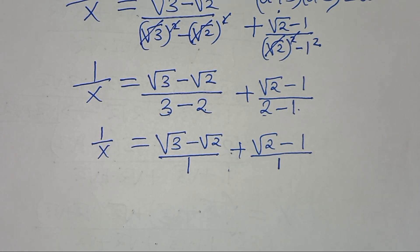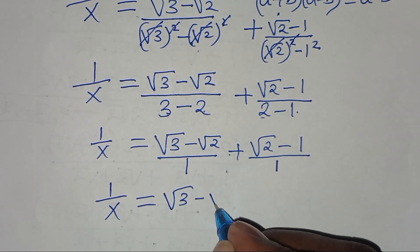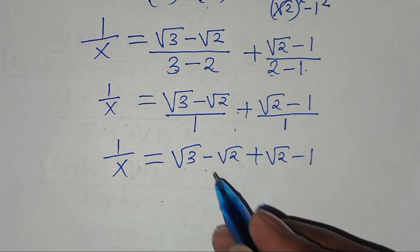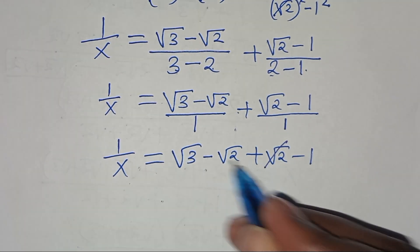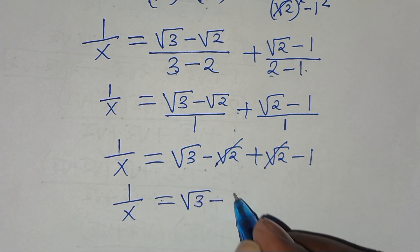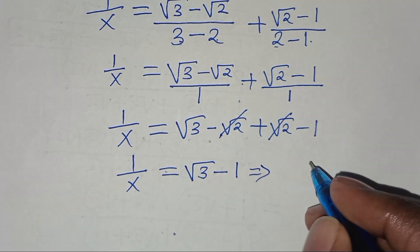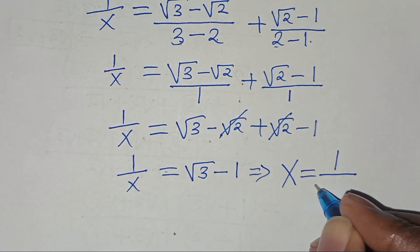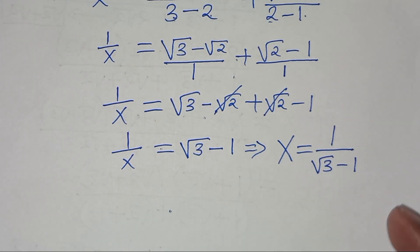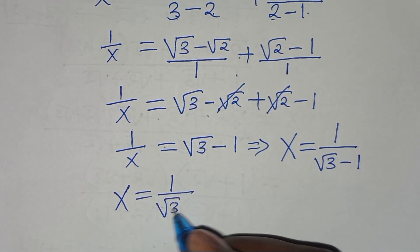So 1 over x equals (square root of 3 minus square root of 2) plus (square root of 2 minus 1). The negative square root of 2 and positive square root of 2 cancel, leaving 1 over x equals square root of 3 minus 1. This implies x equals 1 over (square root of 3 minus 1).